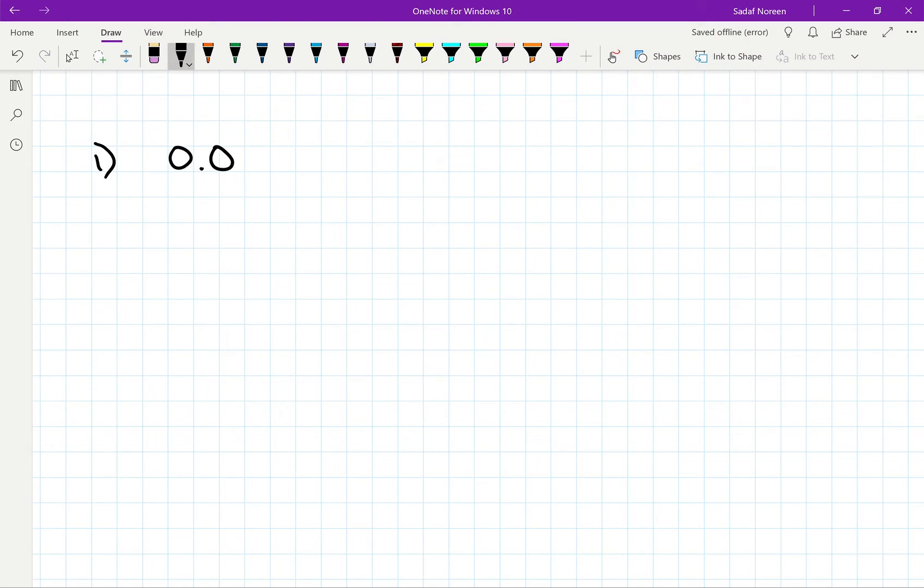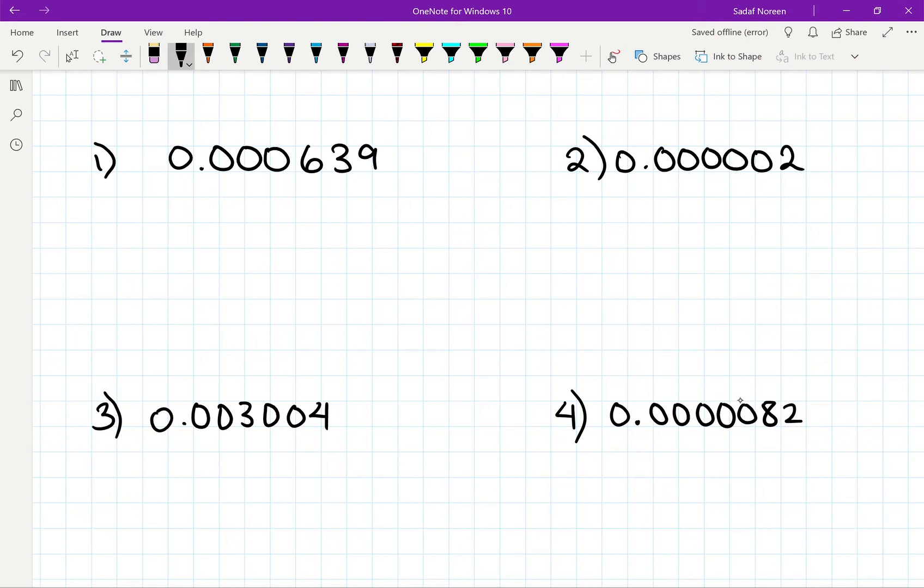So your first number to do is 0.000639. Your second number is 0.0000002. Your third number is 0.003004. And finally you have number 4, 0.00000820.